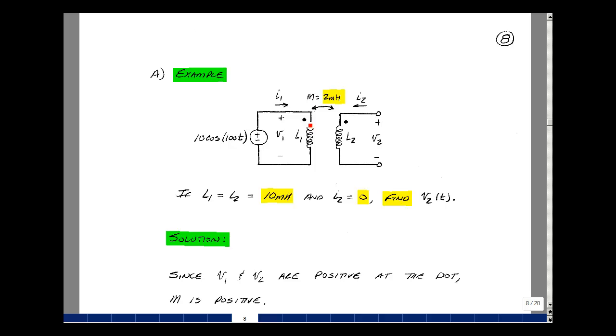Given this circuit, where the mutual inductance is 2 millihenries, and the inductance of L1 and L2 is 10 millihenries, and the current I2 is 0, can you solve for V2 of t?